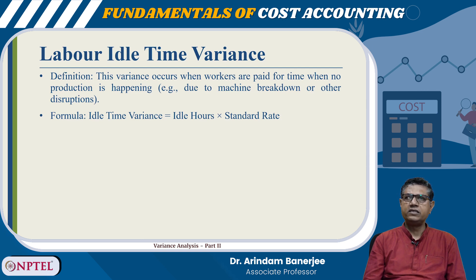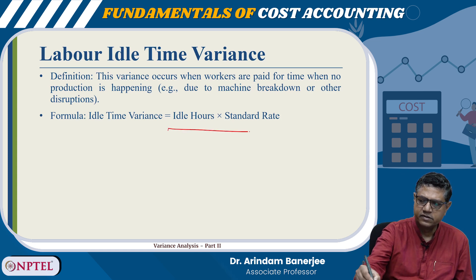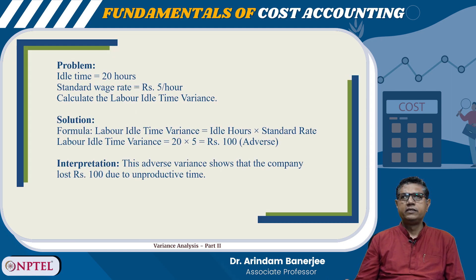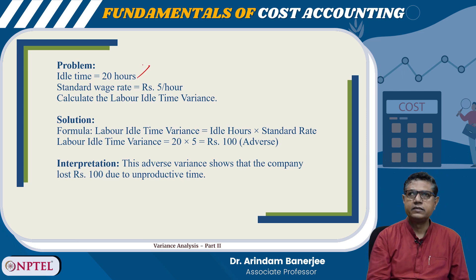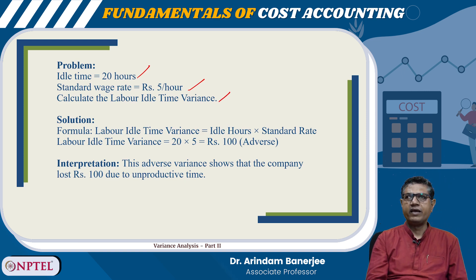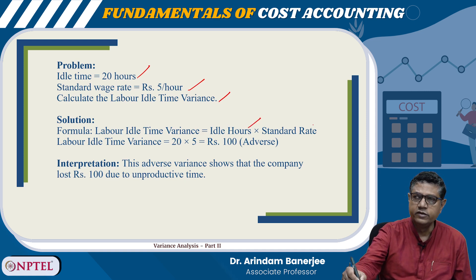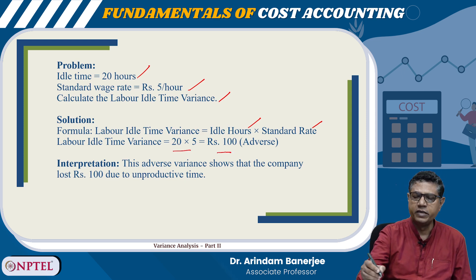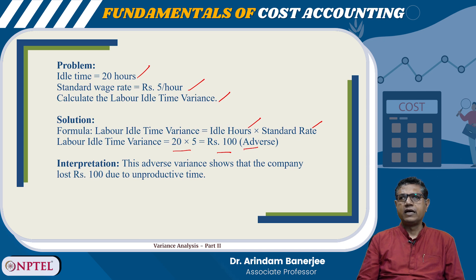Labor idle time variance is equal to Idle Hours × Standard Rate. Here is the problem and solution: idle time 20 hours, standard wage rate 5 per hour. Labor idle time variance = 20 × 5 = 100, and it is adverse. This adverse variance shows that the company lost 100 due to unproductive time.